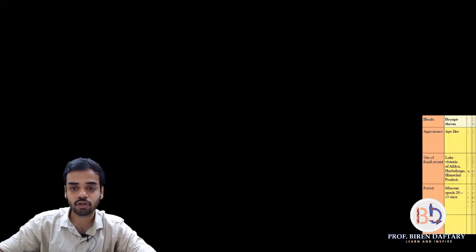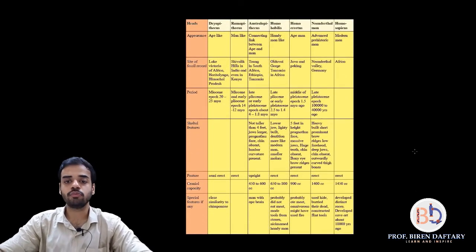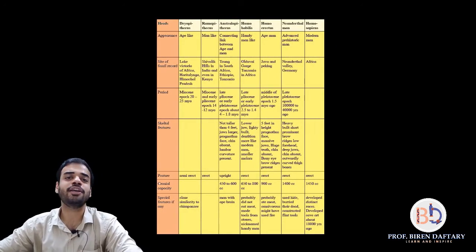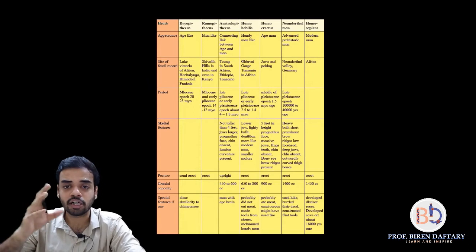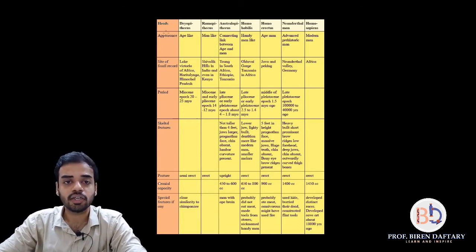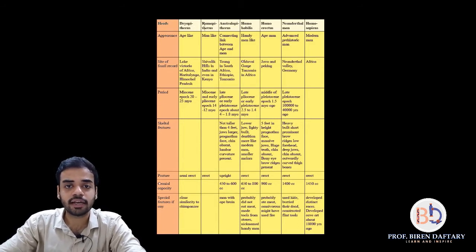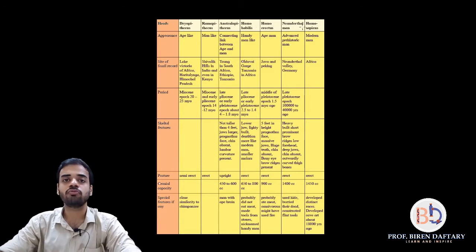The stages of human evolution move through three broad phases: first the ape stage, then the ape-man stage, and then the man stage. I have a chart we will use to study these stages. This part is very theoretical — not important for board exams but important for NEET and CET.